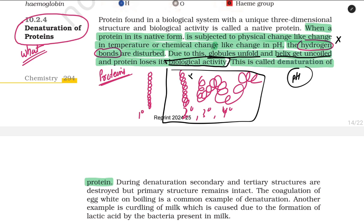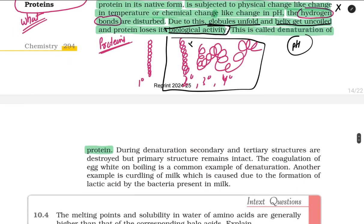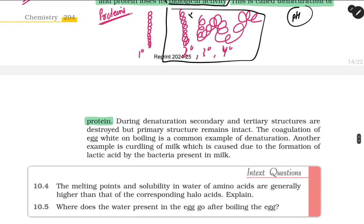Due to which the folding and the globules get unfolded, the helix gets uncoiled, and protein loses its biological activity. Now there is an important line: during denaturation, the secondary and tertiary structures are destroyed but the primary structure remains intact.